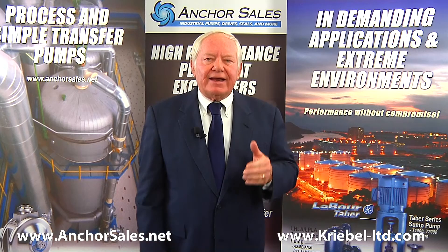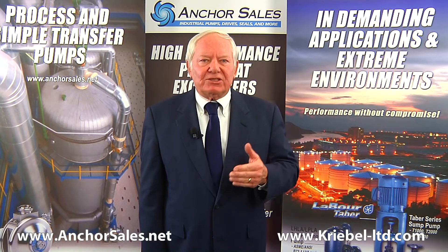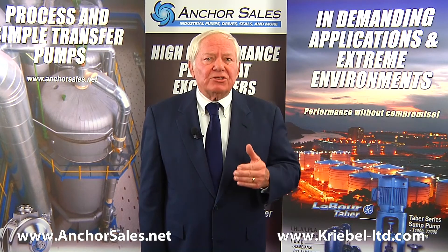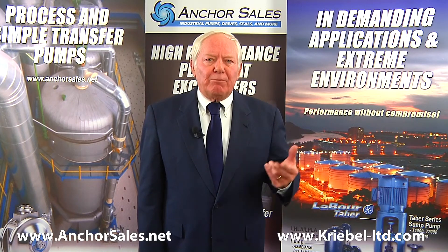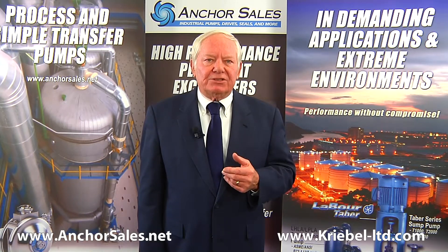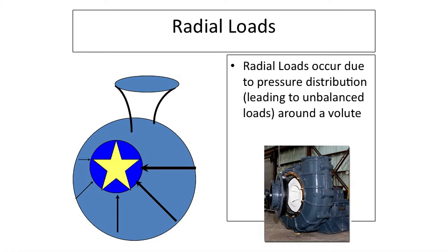This could set a minimum flow based on axial loading. Designers minimize axial loads with balance holes, back rings, and pump-out vanes. Similarly, centrifugal pumps generate radial loads due to load imbalances around the impeller. This is due to volute geometry. The pump designer tries to minimize radial loads at the best efficiency point.